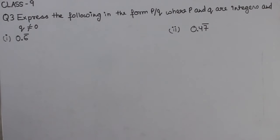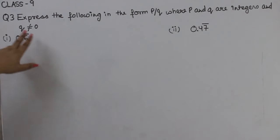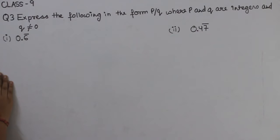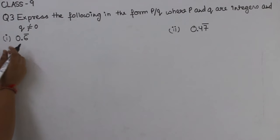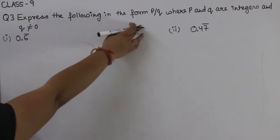Hello students. In this video, we are going to start with Exercise 1.3, expressing numbers in the form P by Q, where P and Q are integers and Q is not equal to 0. So we have to express the given parts in the form of P by Q.